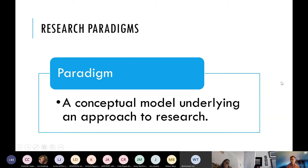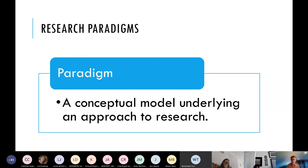Now I want to talk about research paradigms. A paradigm is a conceptual model which underlies an approach to research. Paradigms are said to have three characteristics and ask some specific questions. Those characteristics are ontology, epistemology, and methodology.